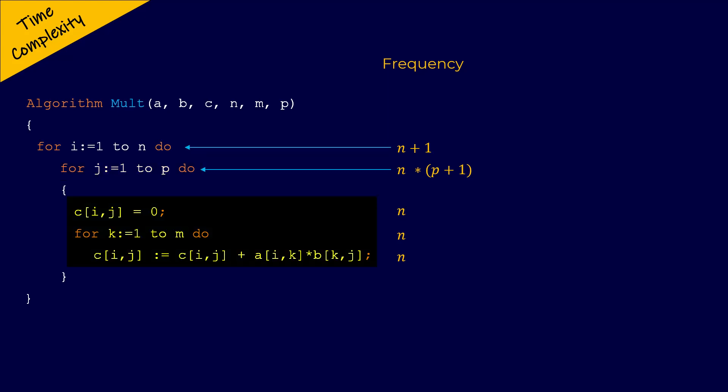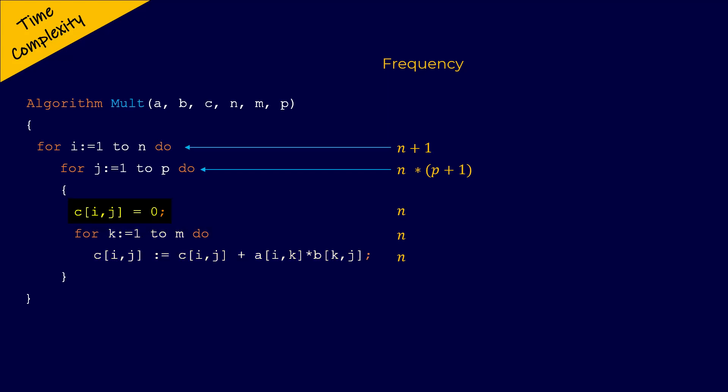The statements inside the for loop for J will execute for P times. The statement C of I comma J is a primitive statement, so it takes unit time. But since the statement C of I comma J is inside the for loop for J and also inside the outer for loop for I, this statement will actually execute for N multiplied by P times.